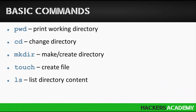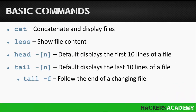Here are the basic commands we're going to explore: 'pwd' stands for print working directory; 'cd' is change directory; 'mkdir' creates a directory; 'touch' creates a file; 'ls' lists directory content. We'll also look at 'cat', which displays a file's content, and 'less', which shows file content in a different way. 'head -n' displays the first n lines of a file — by default, the first 10.